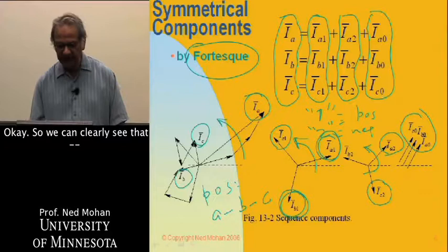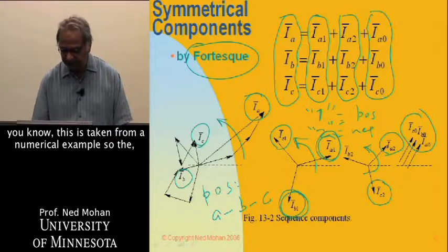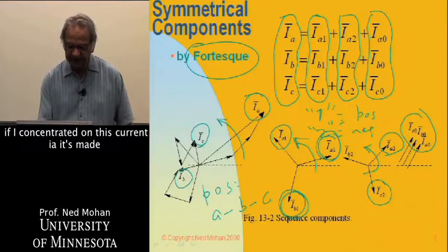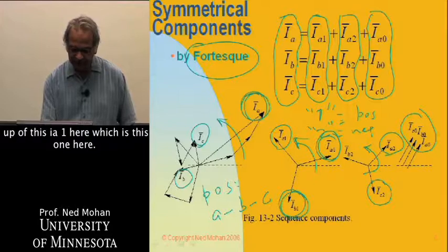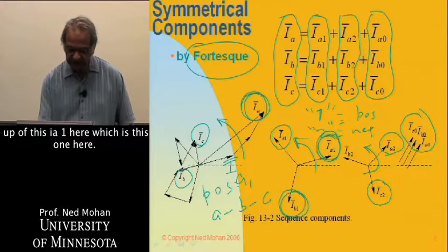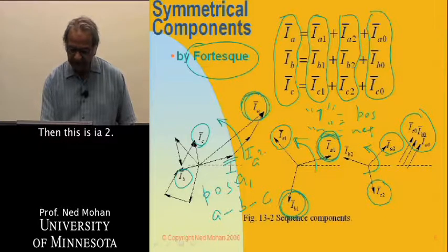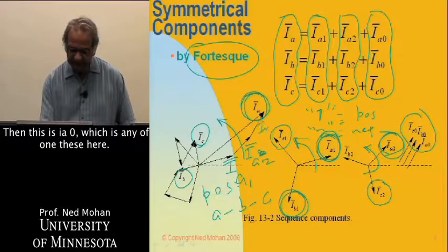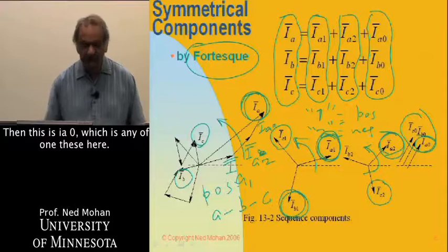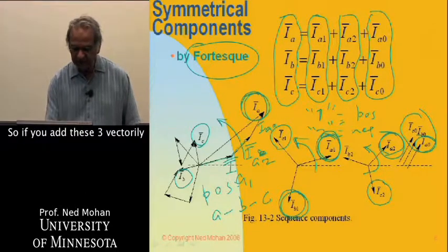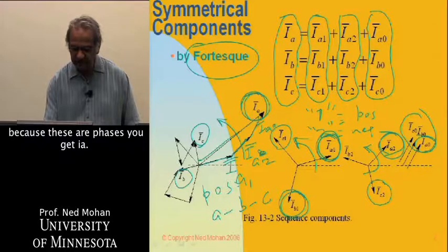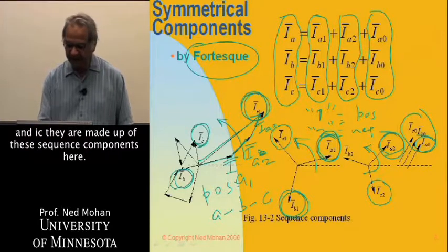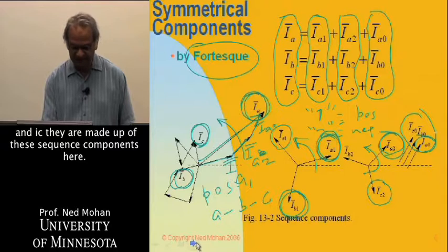We can clearly see that this is taken from a numerical example. These components are what they should be. If I concentrate on this current Ia, it's made up of this Ia1 here, which is this one here. Then this is Ia2, which is this one here. And then this is Ia0, which is any one of these here. If you add these three vectorially, because these are phasors, you get Ia. Similarly, you can follow along and do Ib and Ic. They are made up of these sequence components here.